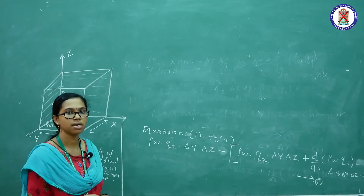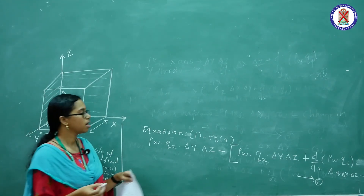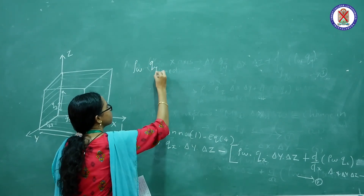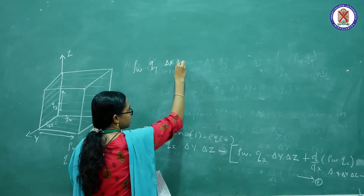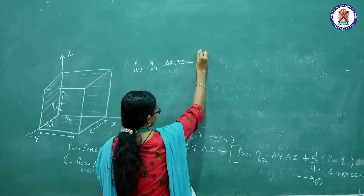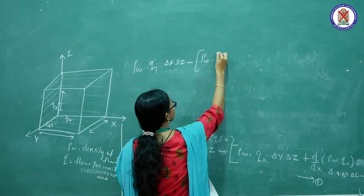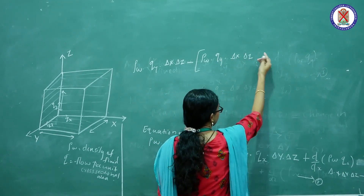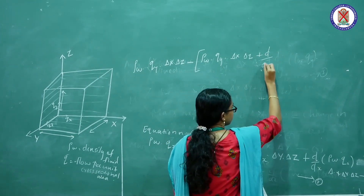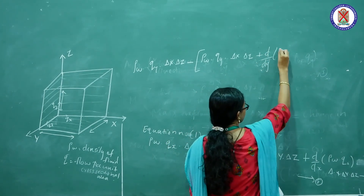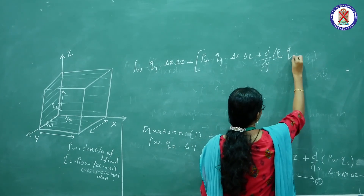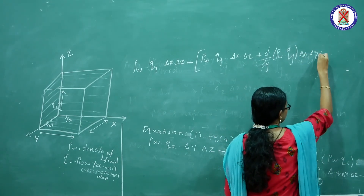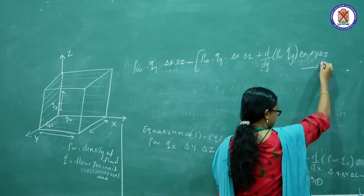This is the mass inflow minus mass outflow in the y-direction. The equation will be: rho_w into qy into delta x into delta z, minus rho_w into qy into delta x into delta z, plus d/dy of rho_w into qy into delta x into delta y into delta z. This is Equation 9.